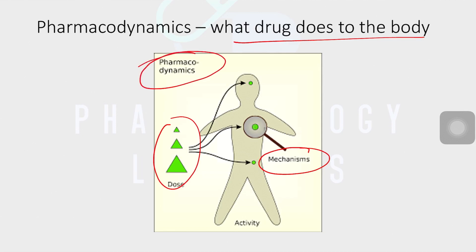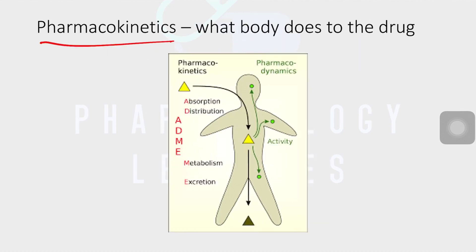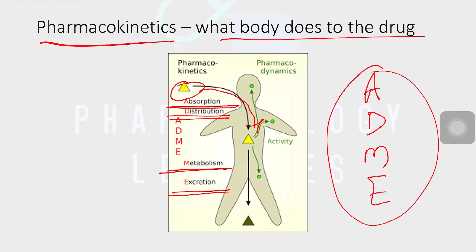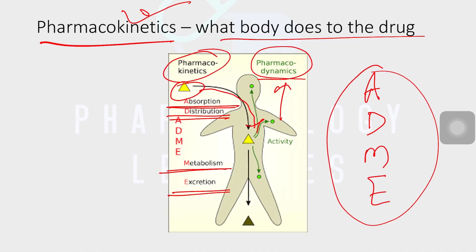Pharmacokinetics is what the body does to the drug. You give a drug, it goes inside your body - then what happens? The drug gets absorbed from your intestine, goes into different systems of your body, gets metabolized, and gets excreted. It is an ADME study: A for absorption, D for distribution, M for metabolism, and E for excretion. Always remember - pharmacodynamics is the drug's mechanism of action, while pharmacokinetics covers what happens to the drug once it enters your body.